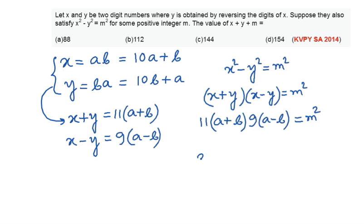So 9 can easily be written as 3² × 11 × (a + b) × (a - b) and that should be equal to some perfect square m². Now let us see logically what does it imply.